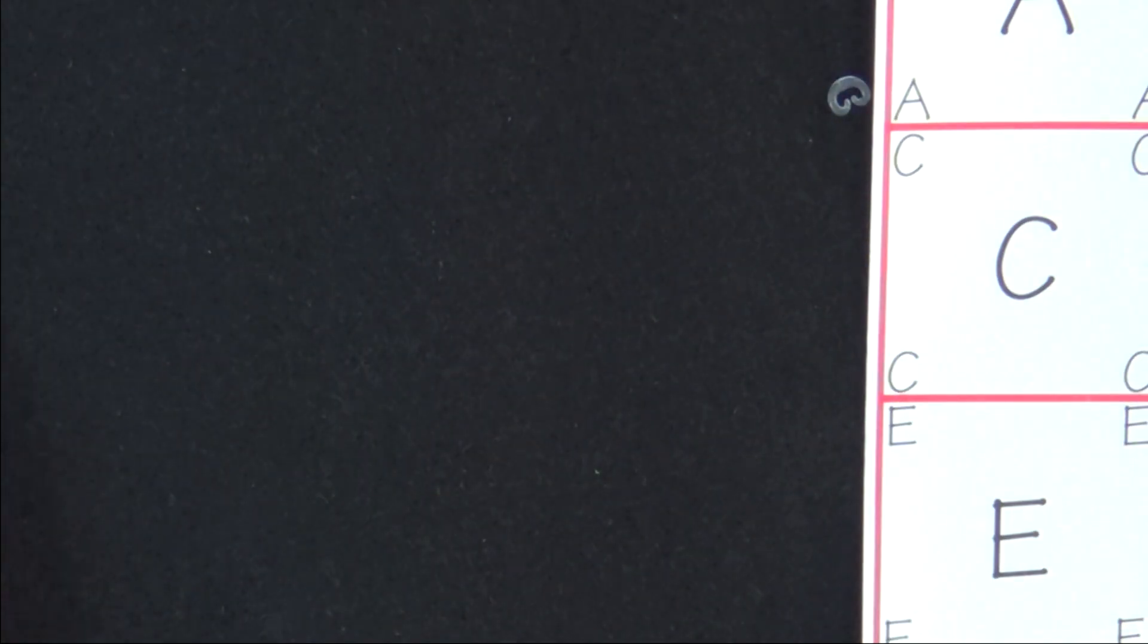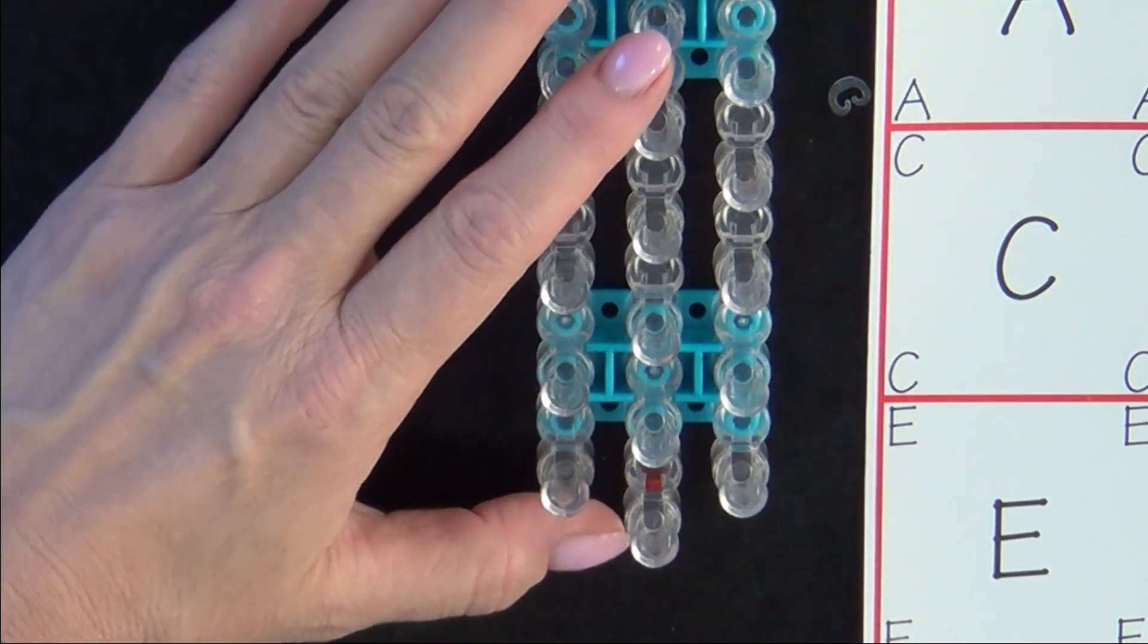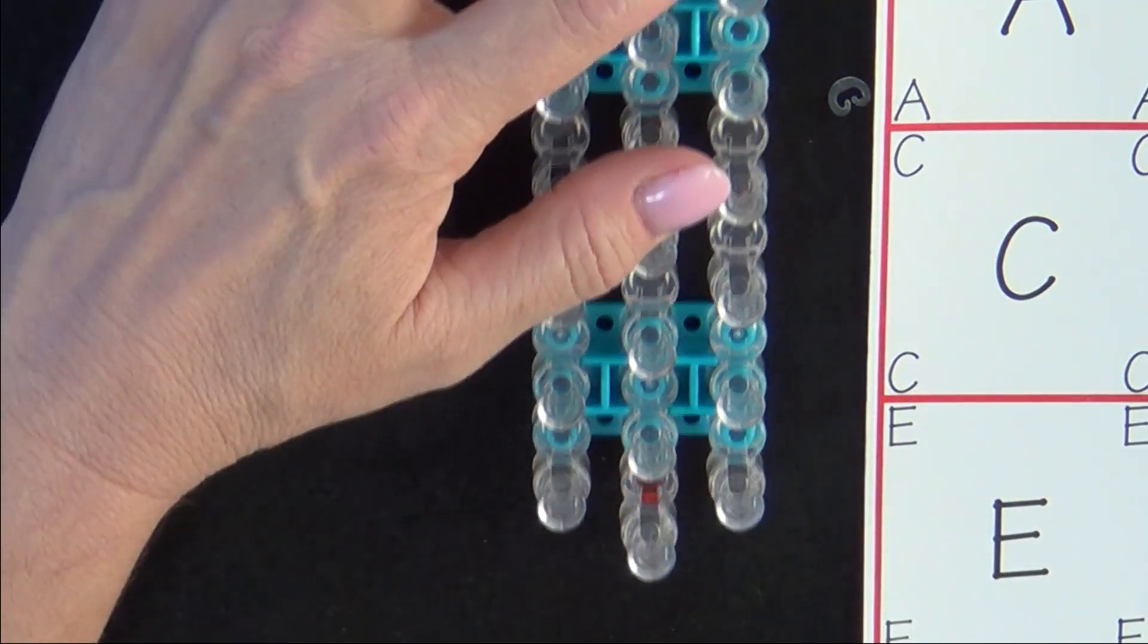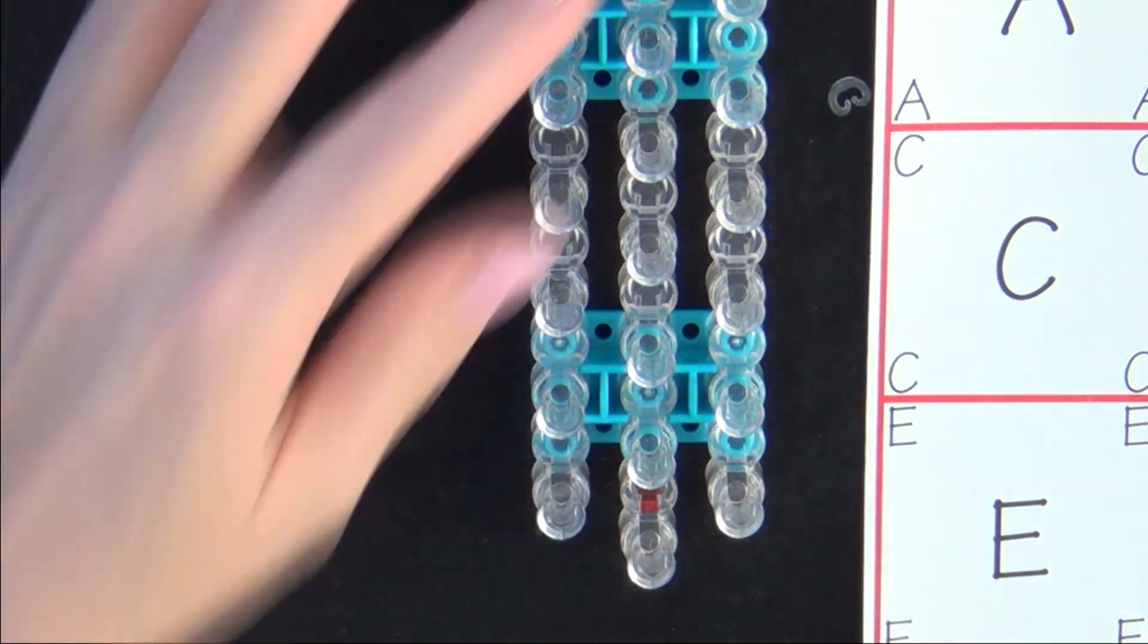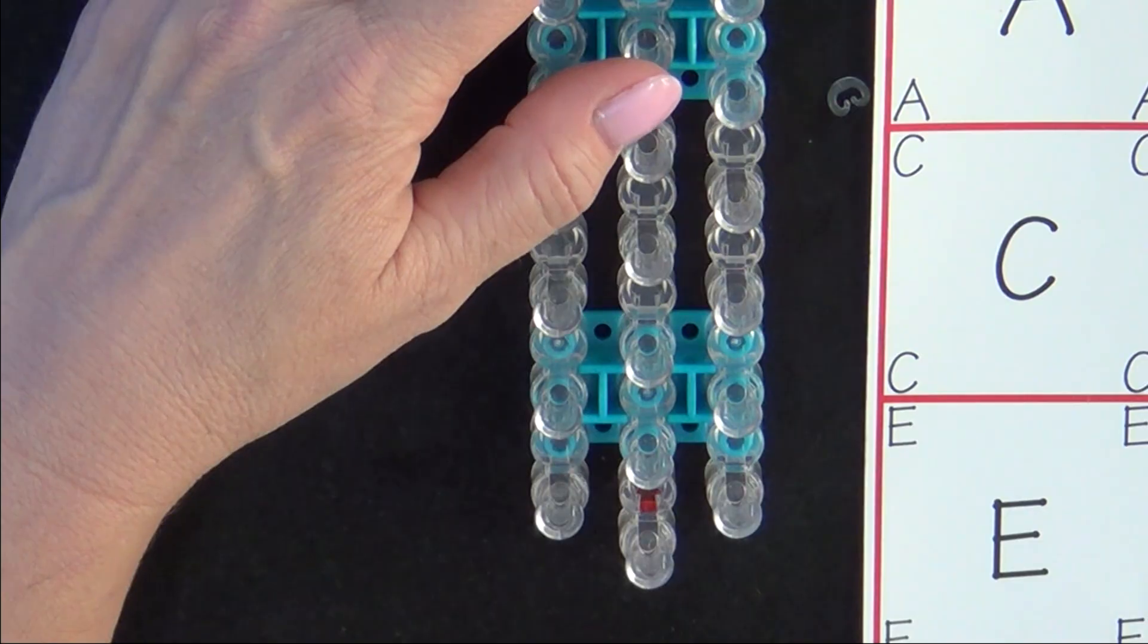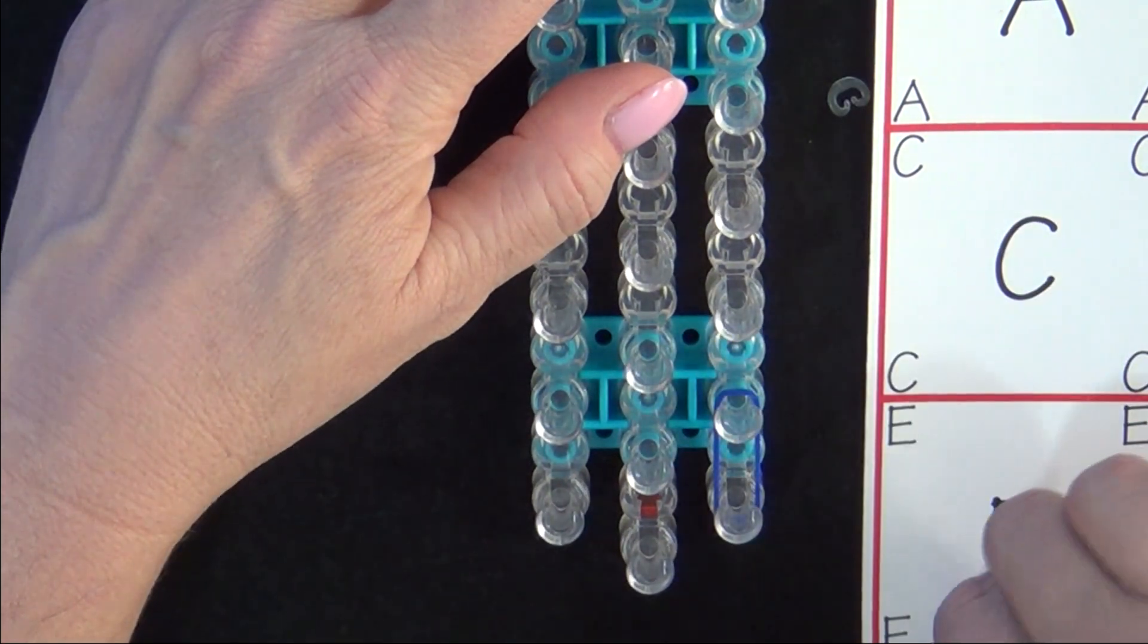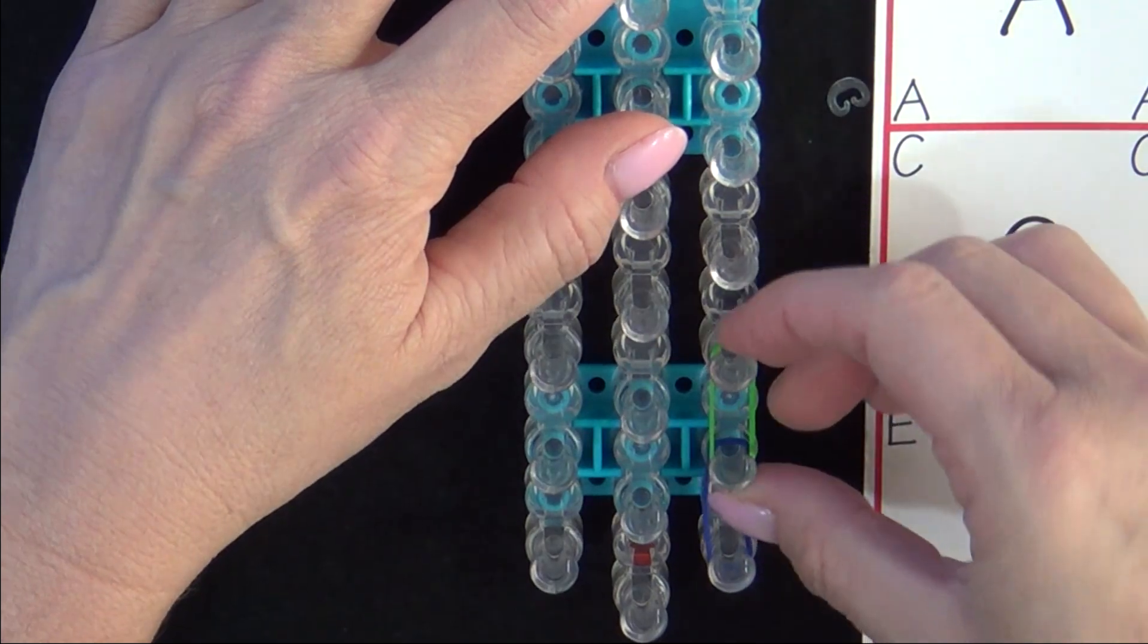Now we'll need to extend the bracelet to fit comfortably on a wrist. Position your loom so that the red arrow is pointing away from you. To extend the bracelet you must first decide how many additional bands you'll need. A smaller wrist may only need three or four bands. A larger wrist may need six or more.